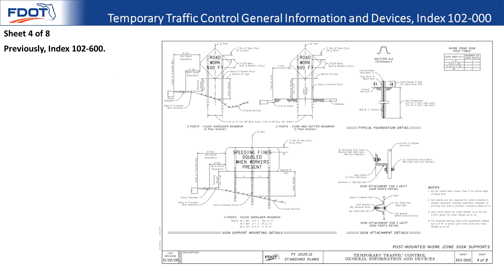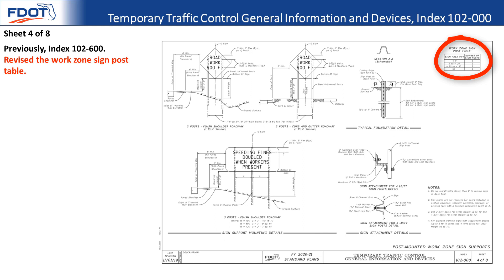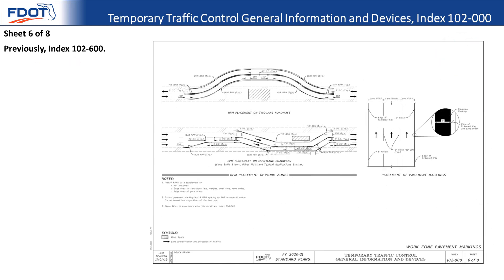Sheet four of eight shows the general work zone sign installation requirements. The biggest change on this sheet is that the work zone sign post table has been revised into a slightly more consolidated format. It no longer lists particular signs — it goes by the sign area to be mounted on the post.